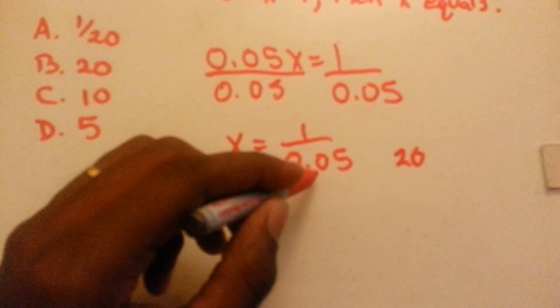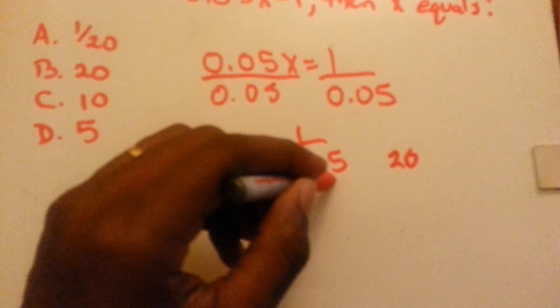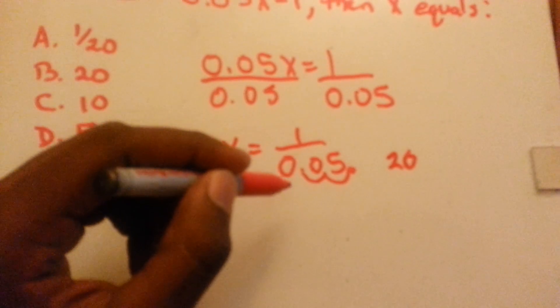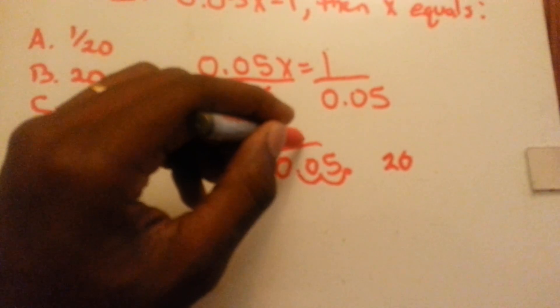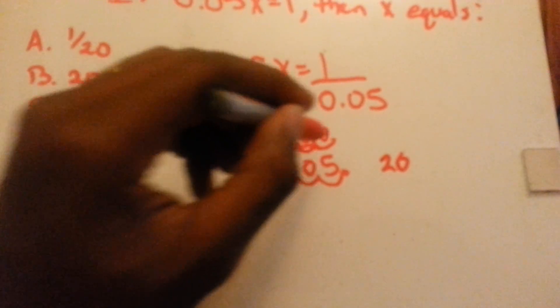All we do is move the decimal point over two places. So 0.05 turns into 5, and 1, the decimal point's here, move it over two, we have to add in those zeros.